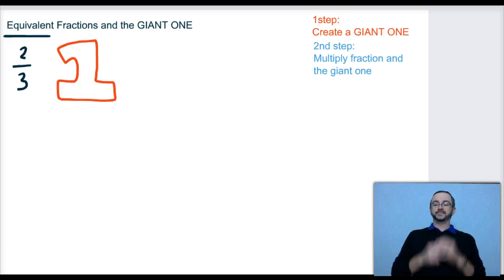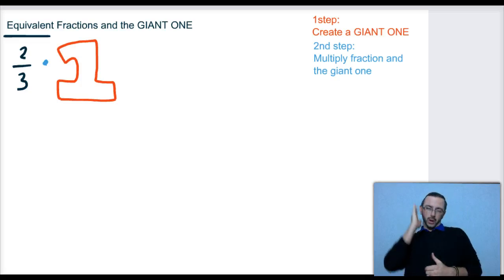The second step is that we're going to multiply the fraction and the giant one together. So right now we're just going to put the multiplication symbol there. We don't have enough to completely finish this yet, but we know we're going to multiply these two things together.